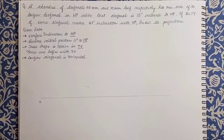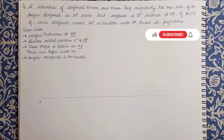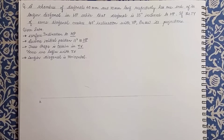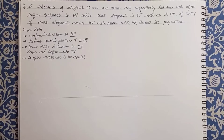Hello dear friends, we are once again with a new problem on projection of plane. The question is: a rhombus of diagonals 40mm and 70mm long respectively has one end of its longer diagonal in HP, while the diagonal is 35 degrees inclined to HP. If the top view of the same diagonal makes 40 degrees inclination with VP, draw its projection.